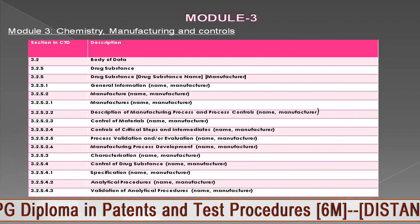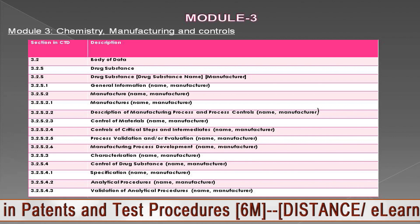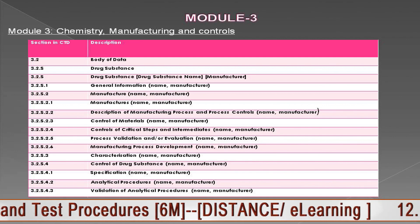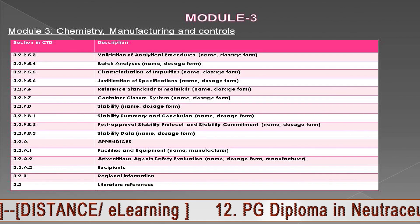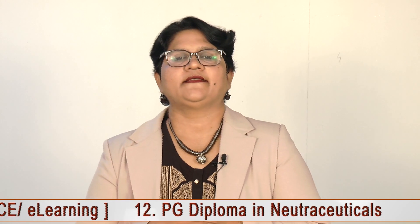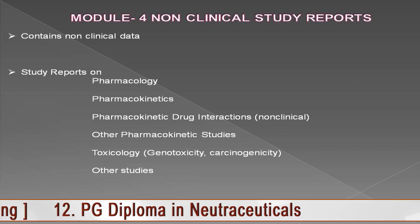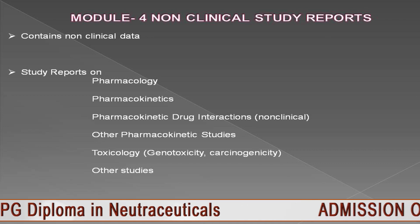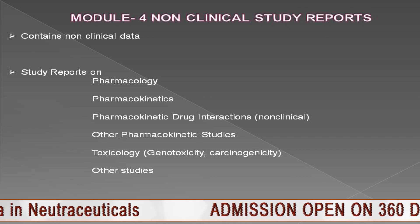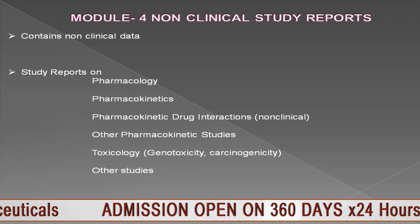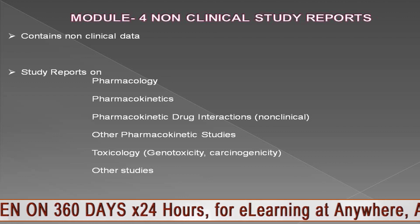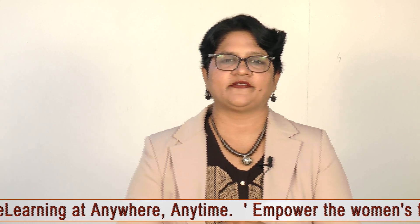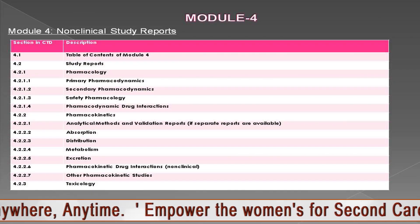The Module 3 hierarchy is divided into 3.S for drug substance and 3.P for drug product. Module 4 is the non-clinical study reports, containing mainly pharmacology, pharmacokinetics and pharmacokinetic drug interactions, other pharmacokinetic studies, toxicological data including genotoxicity and carcinogenicity, and any other animal studies performed. Module 4 is not required for generic products like ANDA applications; it is required mainly for new drug applications.